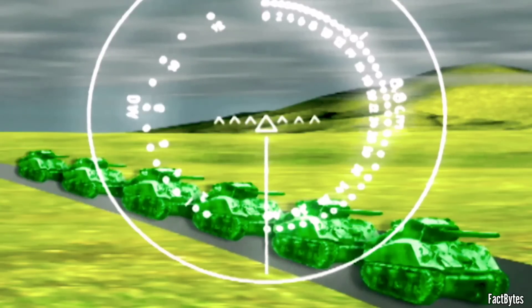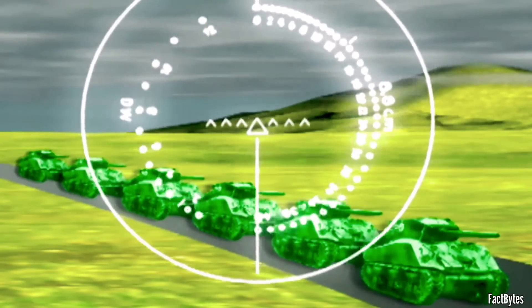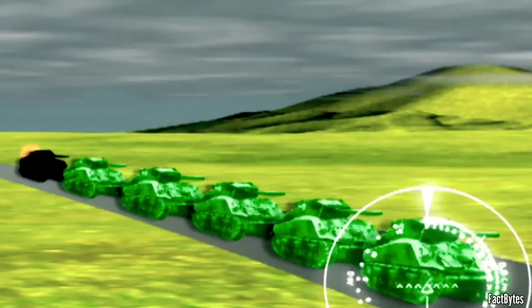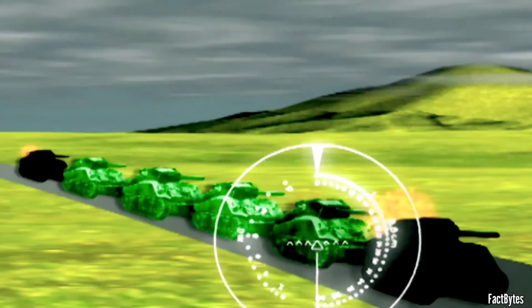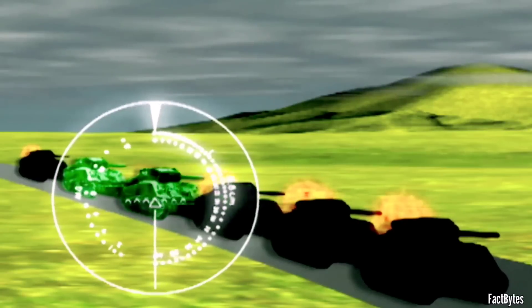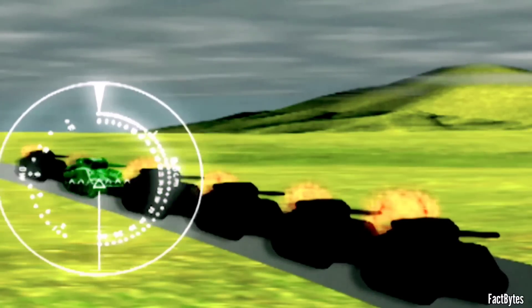But in practice, the position of the gun sight to the left of the gun meant that the gunner would need to make a slight adjustment to the aim point. This adjustment ensured that the projectile would hit the target at the desired point, compensating for the offset between the gun sight and the gun itself.